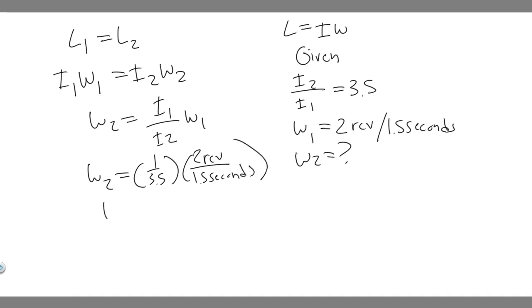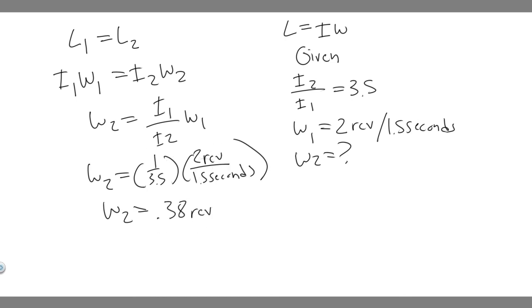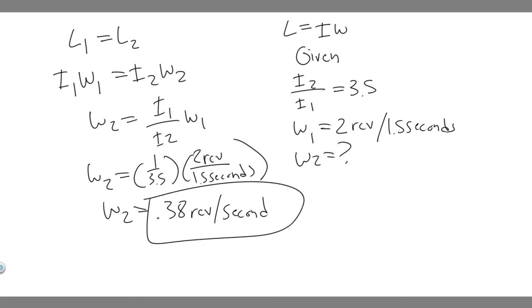We can now solve: 2 divided by 1.5, then divided by 3.5 — or multiplied by 1 over 3.5 — gives us 0.38. The units are revolutions per second. So the answer is 0.38 revolutions per second when the diver is in the straight position.